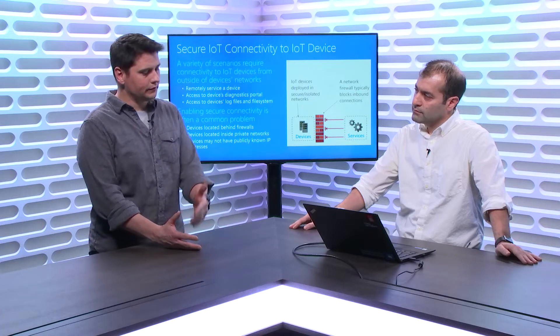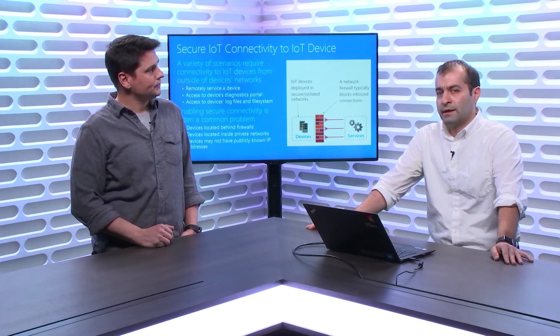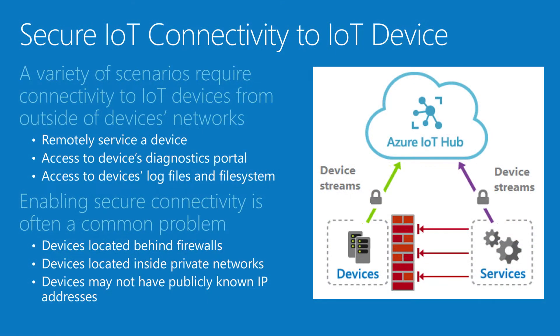IoT Hub, once the device is authenticated and connected, provides a tunnel for communicating over various protocols — MQTT or AMQP — to transmit telemetry data or synchronize the device twin. IoT devices that are homed to an IoT Hub already have an outbound connection to Azure Cloud. What we're enabling through Device Streams is to leverage that outbound connection already established from the device to the Cloud, to also be used for receiving traffic over incoming connections on the device side.